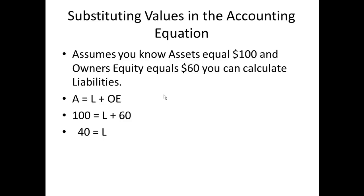Let's look at substituting values into the accounting equation. Assume assets are $100 and owner's equity is $60 — what are the liabilities? We have 100 equals liabilities plus 60. Deducting 60 from each side gives us liabilities equals 100 minus 60, so liabilities equal $40.